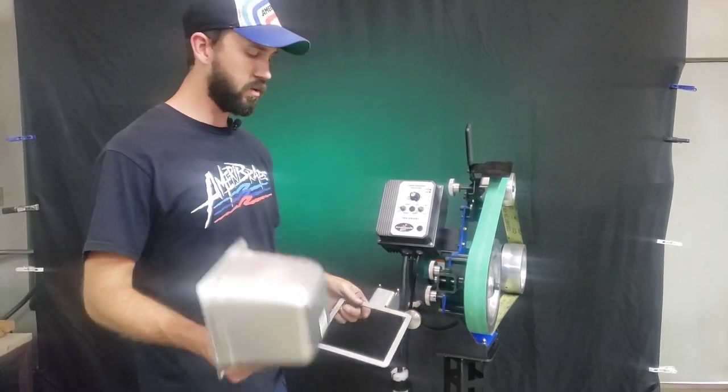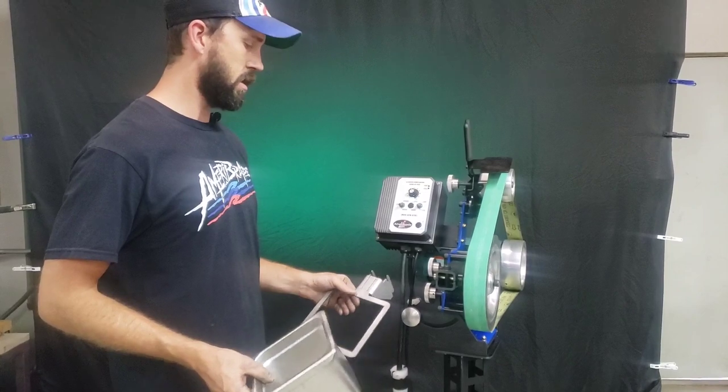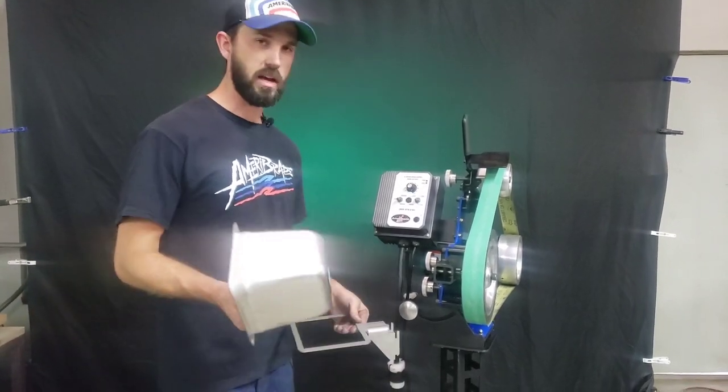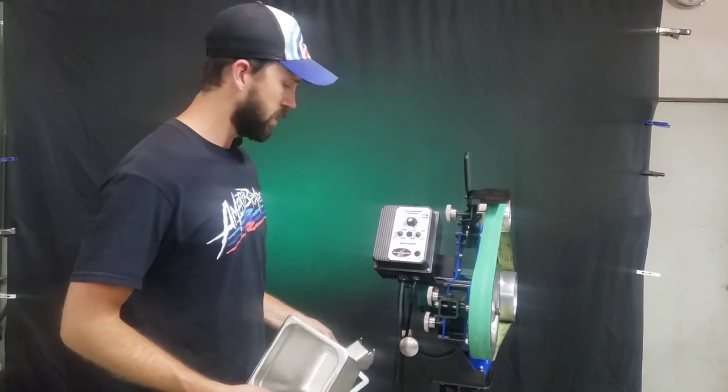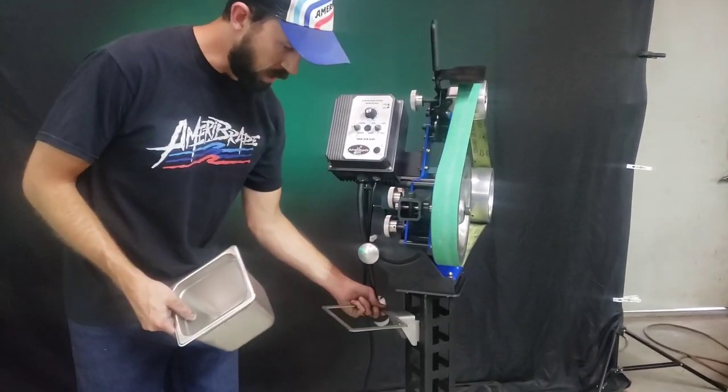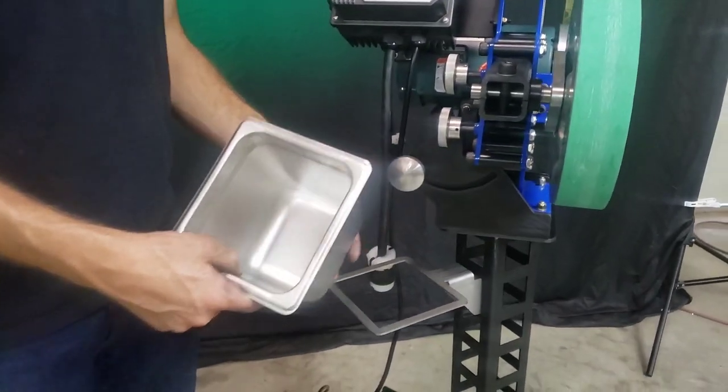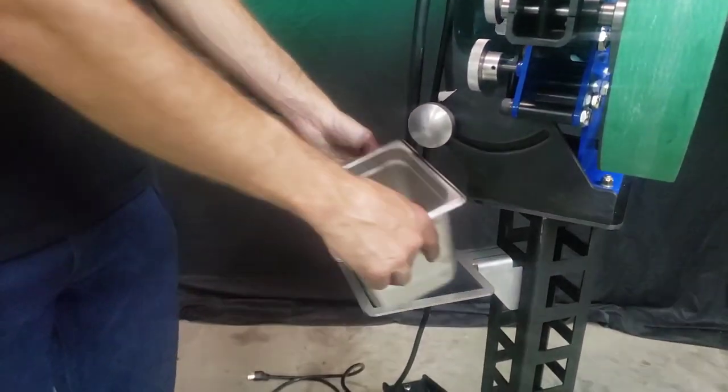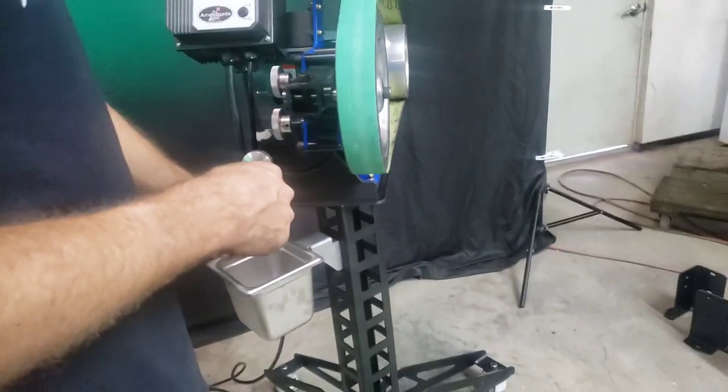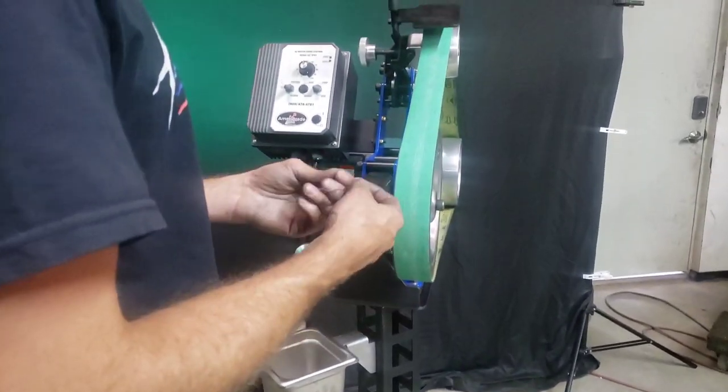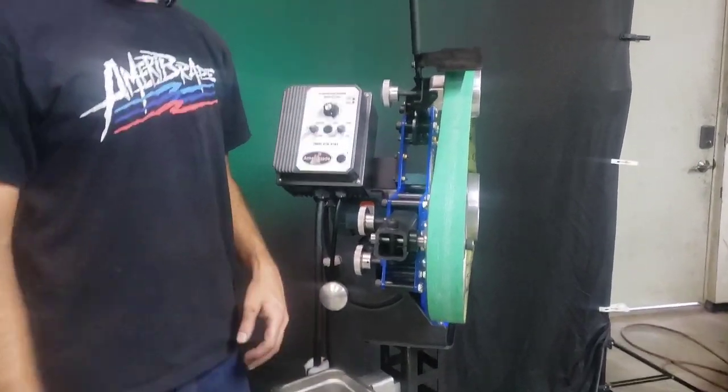We can talk about our water bucket really quick. A lot of people think it's for catching sparks, but that's not the intent. The intent is just to have somewhere quick to dip your work to keep it cool. So it hangs from our pedestal stands and the bucket is stainless steel. The mount is stainless steel and it hangs off to the side there for a quick place to dump your work piece to keep it cool to the touch, protect your temper on your blade, or just to protect your fingers.